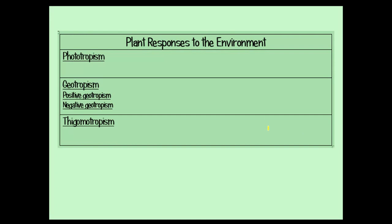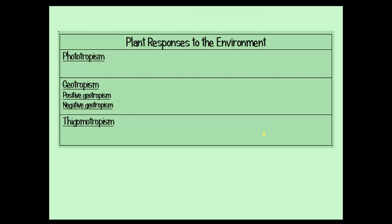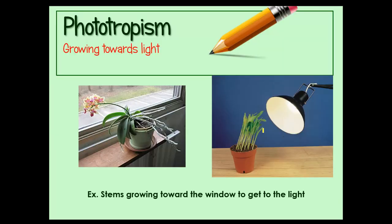The last part is plant responses to the environment — different things plants do to help them survive. One of them is called phototropism. This is easy to remember: think about taking a photo, which is just capturing light. Phototropism is when a plant grows towards the light. You can see plants bend toward the light, and you can recreate it in the lab with an artificial light source.